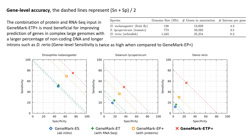The differences between algorithms are more pronounced when evaluated on the gene level. In this type of evaluation, the prediction is considered correct only when the full annotated and predicted gene structures exactly match. The results show that the combination of protein and transcript input in GeneMark ETP+ is most beneficial for improving the predictions of genes in complex, large genomes with a larger percentage of non-coding DNA and longer introns, such as Danio rerio, the zebrafish. For example, compared to the next best-performing algorithm, the gene-level sensitivity of GeneMark ETP+ is almost twice as high.